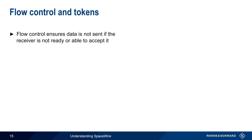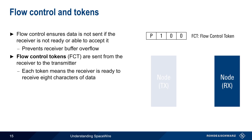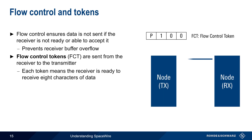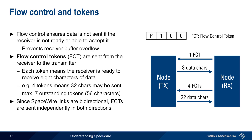Flow control is a process that ensures that data is not sent to a receiver unless that receiver is both ready and able to receive it, preventing buffer overflow and data loss. Flow control is implemented using the flow control token control character. These are sent from the receiver to the transmitter, with each token representing the ability to receive eight data characters. Multiple tokens can be sent — for example, four tokens means that 32 data characters may be sent — and there can be up to seven outstanding tokens. Since SpaceWire links are bidirectional, flow control tokens are sent independently in both directions.